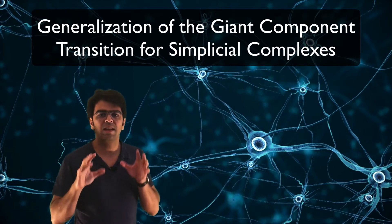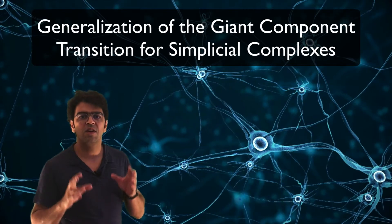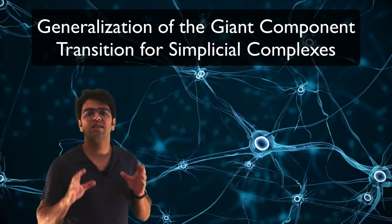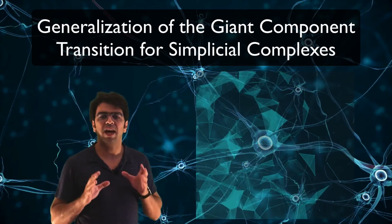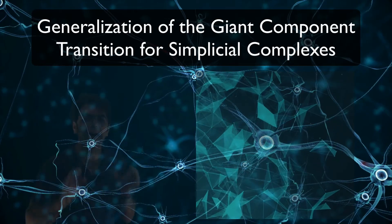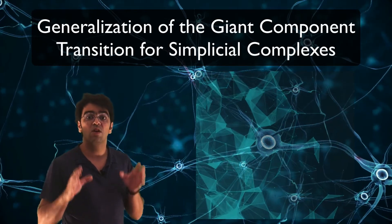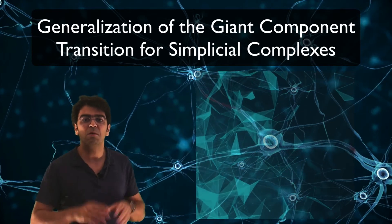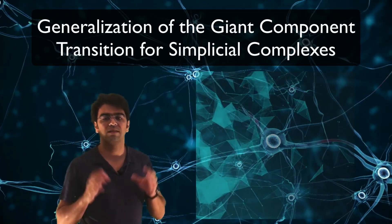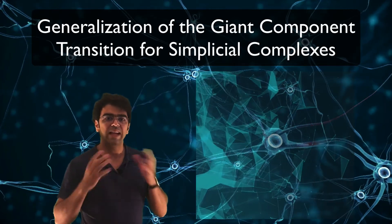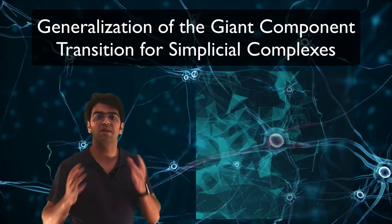Let me now explain the meaning of the generalization of the giant component transitions for simplicial complexes and the impact that it may have for complex systems. After the giant component transition, when we attach a new edge to a network, it will be very likely that this edge will create a loop or a cycle. That's the case for the generalization for a simplicial complex.